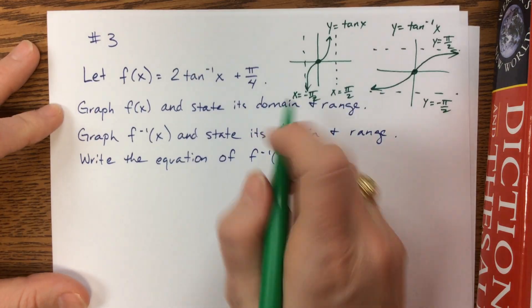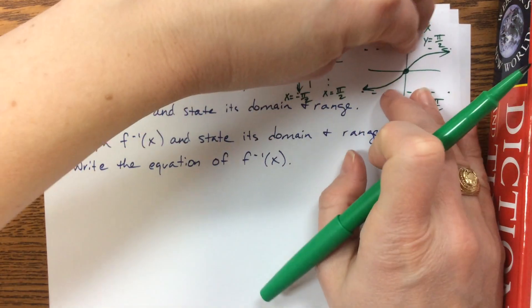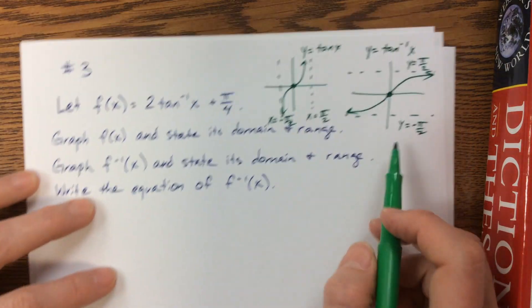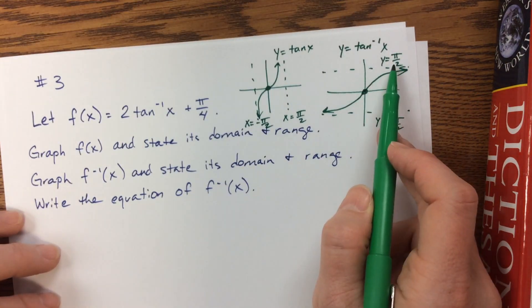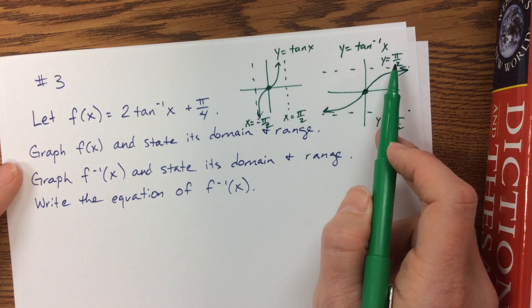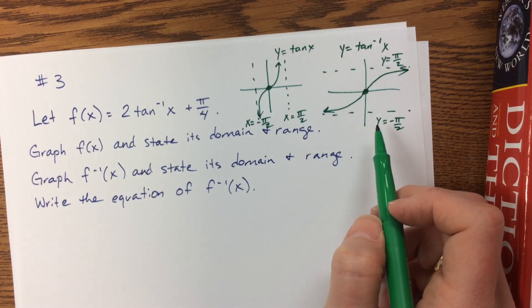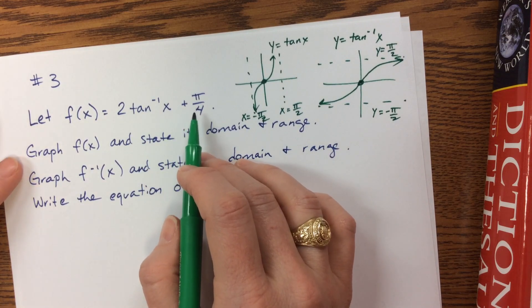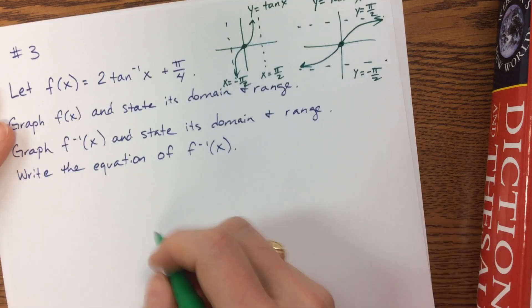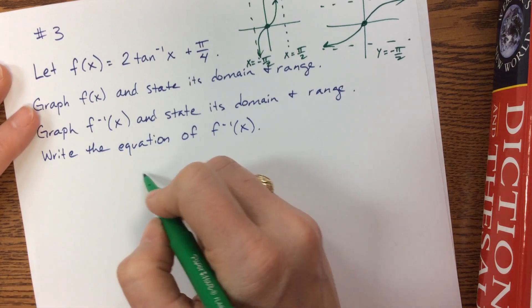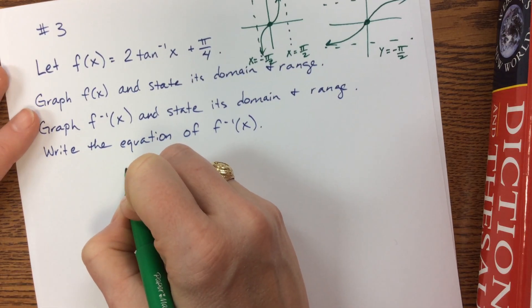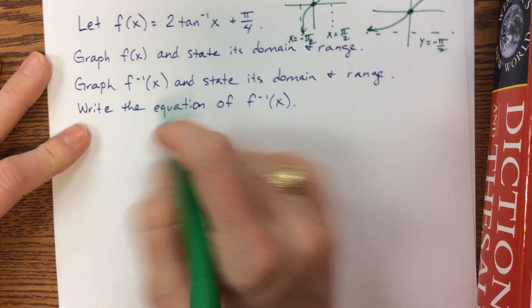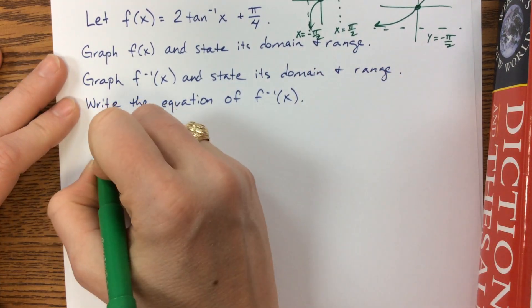Okay, so then the 2 is going to become a vertical stretch, so instead of having an asymptote at π/2, it's now going to have an asymptote at π. Instead of at negative π/2, it's going to be at negative π, and then we're going to shift it up π/4. Let me draw this. Here is f of x.